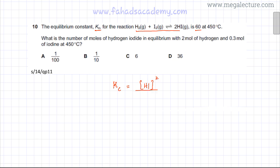So HI is my product, but since there are two moles in the equation it's going to be squared, divided by the concentration of H2 into the concentration of I2 which are my reactants. So this is the expression for Kc and the value is given, it's 60.